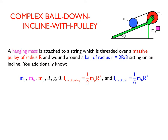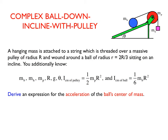Here's our problem. We've got this ball that has a string wrapped around it. The string goes up over a pulley attached to a hanging mass. We know what the ball's radius is in relationship to the radius of the pulley, the various masses, the angle of the incline, and the moment of inertia of the pulley and the ball, both about their central axes. What we're looking for is the acceleration of the ball's center of mass.